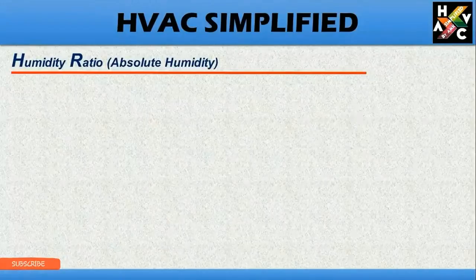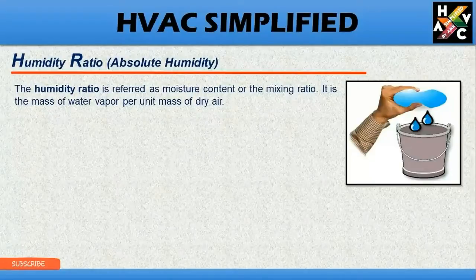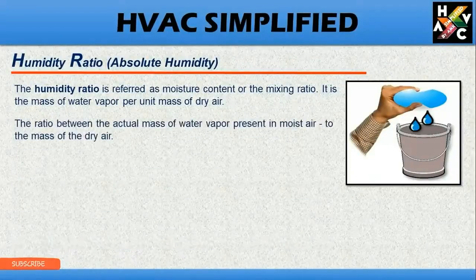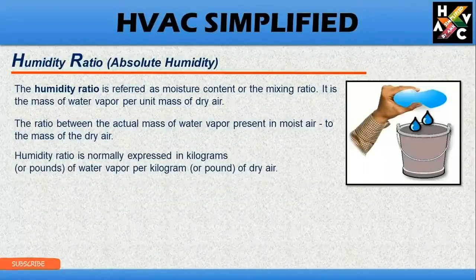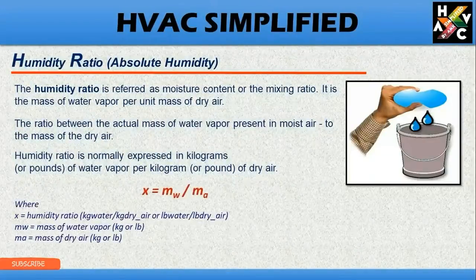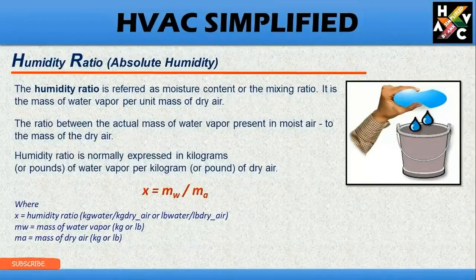Humidity ratio, also known as absolute humidity, is referred to as moisture content or mixing ratio. It is the mass of water vapor per unit mass of dry air — specifically the ratio of the actual mass of water vapor in moist air to the mass of dry air. It is normally expressed in kilograms or pounds of water vapor per kilogram or pounds of dry air. The formula is x = mw / ma, where x is the humidity ratio, mw is the mass of water vapor, and ma is the mass of dry air at the given temperature.